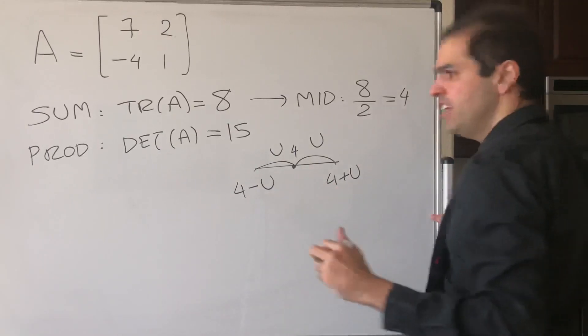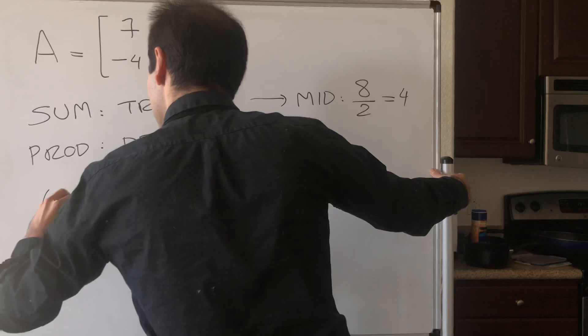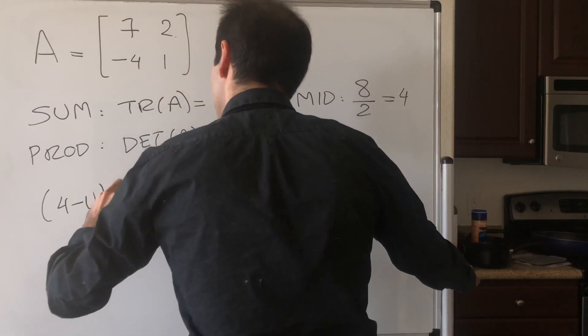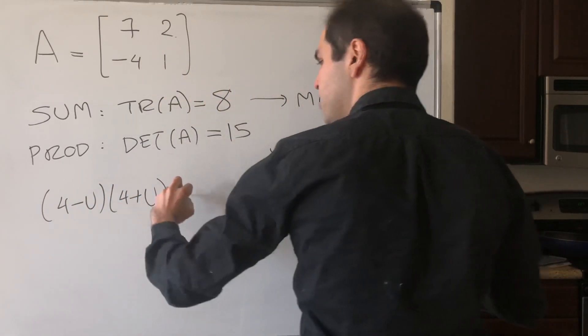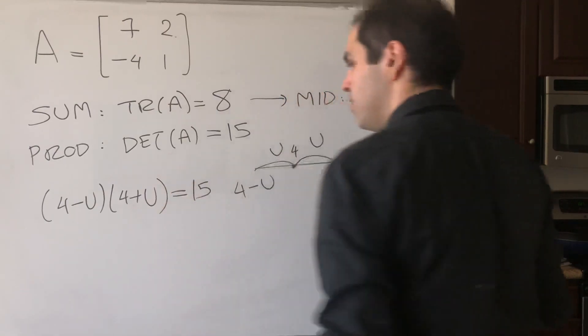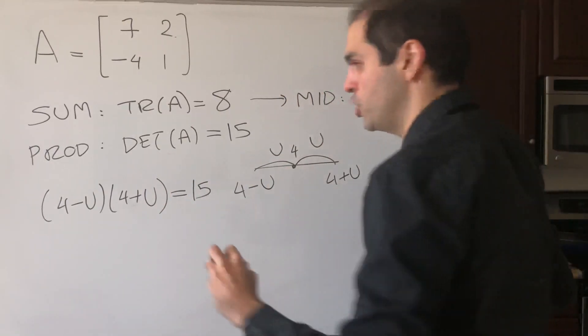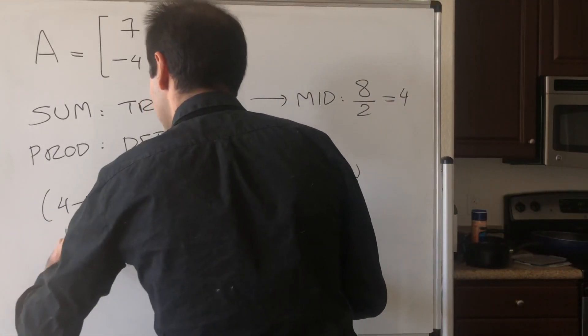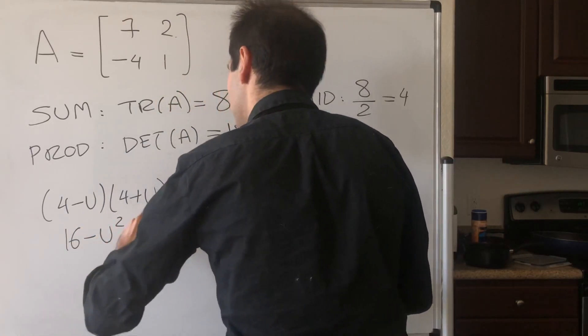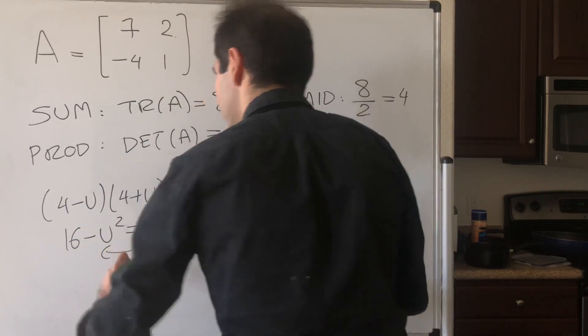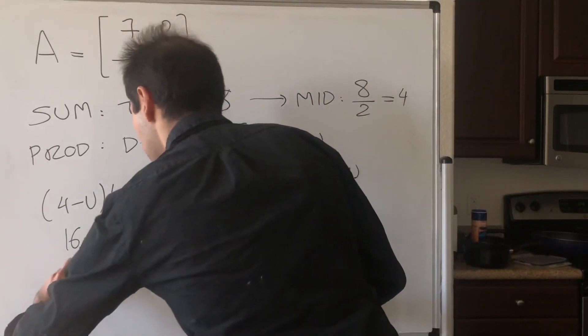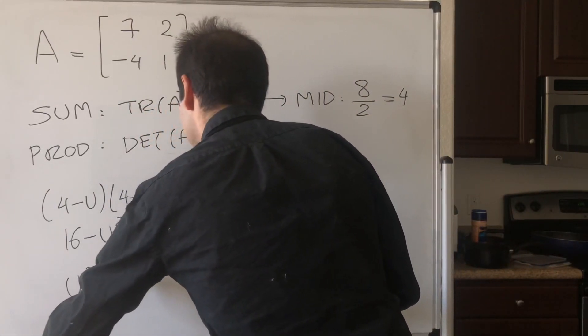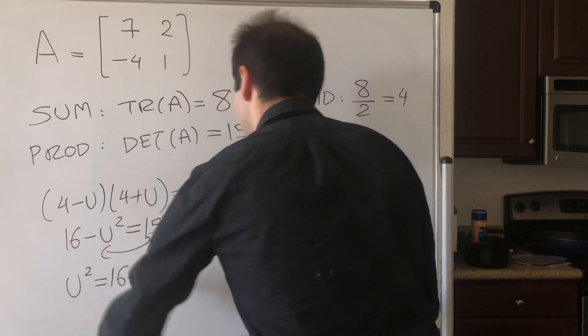In particular, their product is just 4 minus u times 4 plus u. And we know this is equal to 15. And for this, we can solve for u. So we get 16 minus u squared equals 15. So if you swap this, you get u squared is 16 minus 15, which is 1.